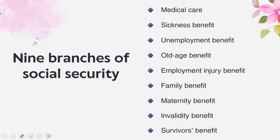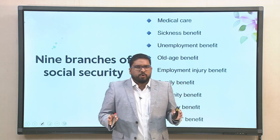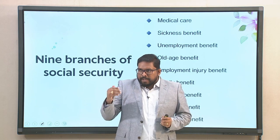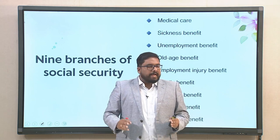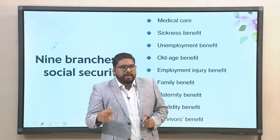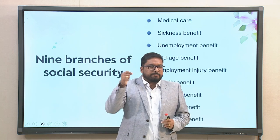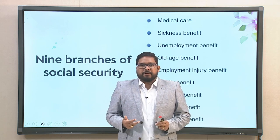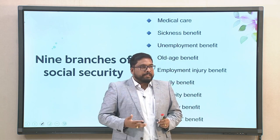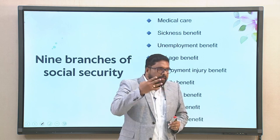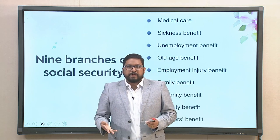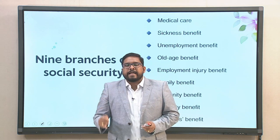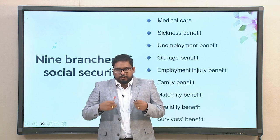The nine branches of social security according to ILO are: first, medical care; second, sickness benefit; third, unemployment benefit; fourth, old age benefit; fifth, employment injury benefit; sixth, family benefit — the organization must also take care of the family; seventh, maternity benefit; eighth, invalidity benefit; and ninth, survivors benefit.